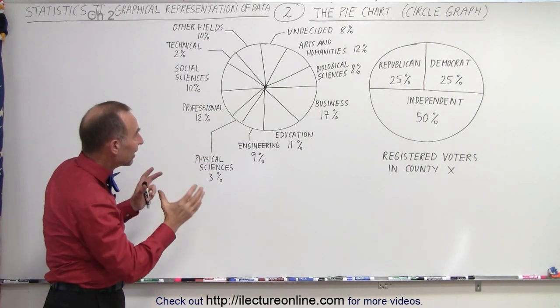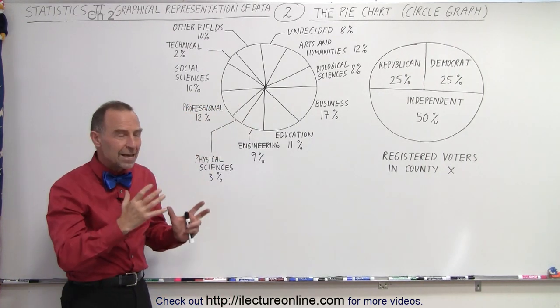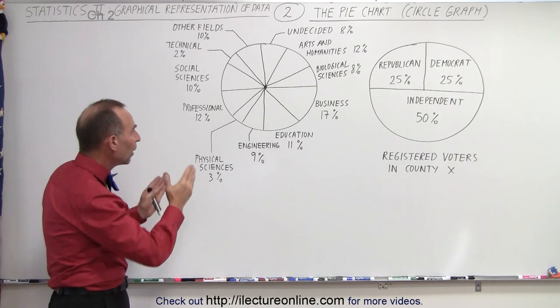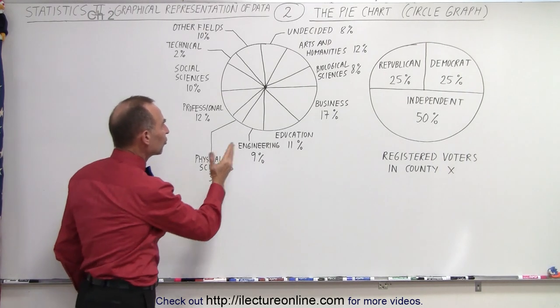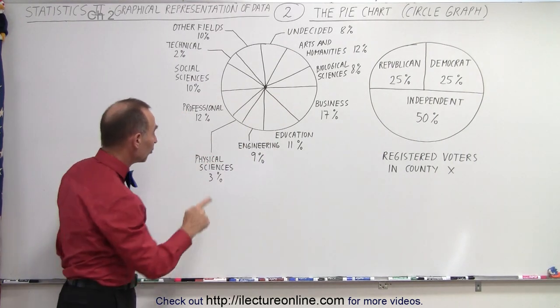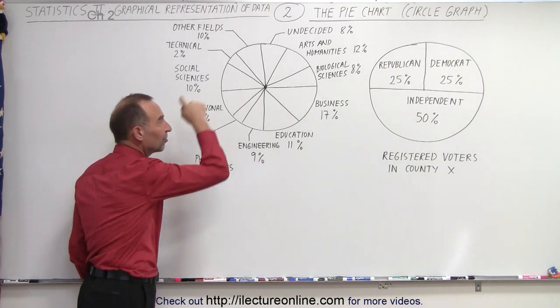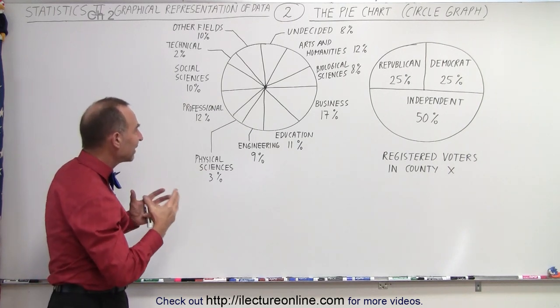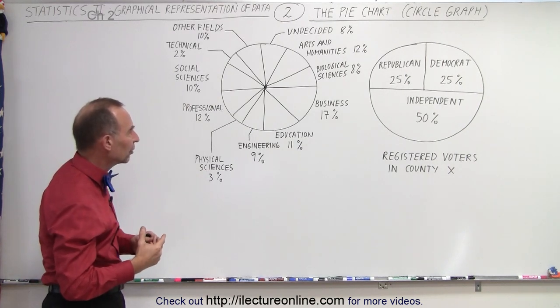But notice that if there's a lot of data types, you begin to lose the ability to compare one by the other strictly by the size of the slices in the pie. And you actually have to start reading the numbers, the percentages, in order to get a feel for how big that slice actually is relative to the others.